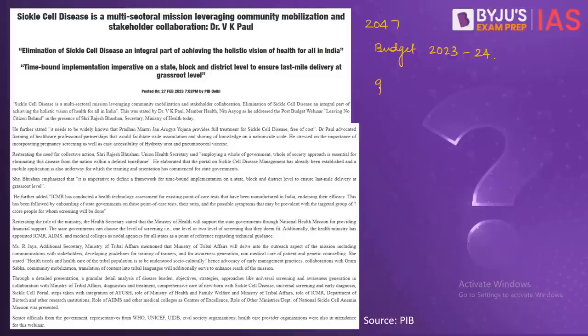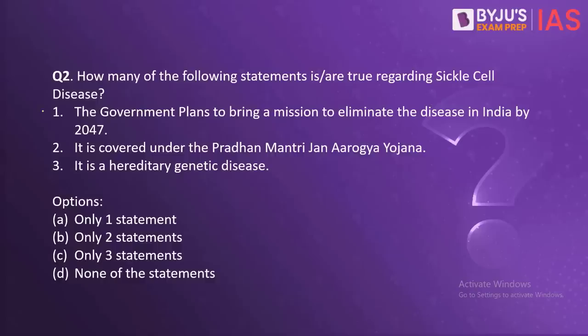It is a genetic disease where the red blood cells, instead of being in the usual round and flexible shape, are in a sickle shape, which affects their capacity to carry oxygen to the different parts of the body. These sickled red blood cells eventually become rigid and sticky and can also lead to a blockage in blood flow. So all three statements are correct, and our correct answer here is C.